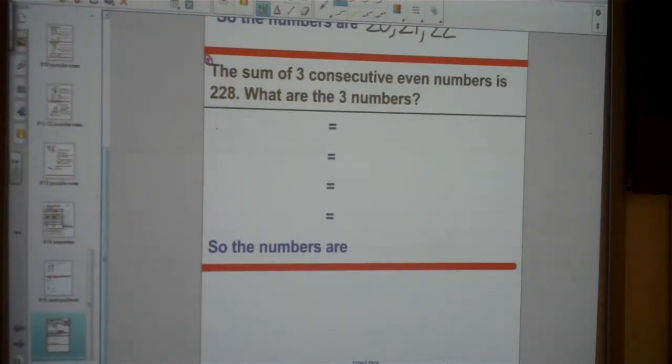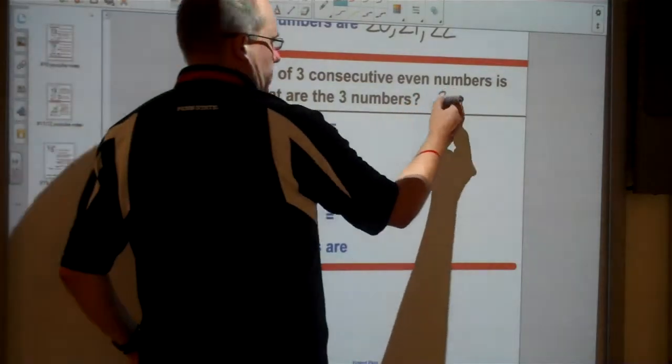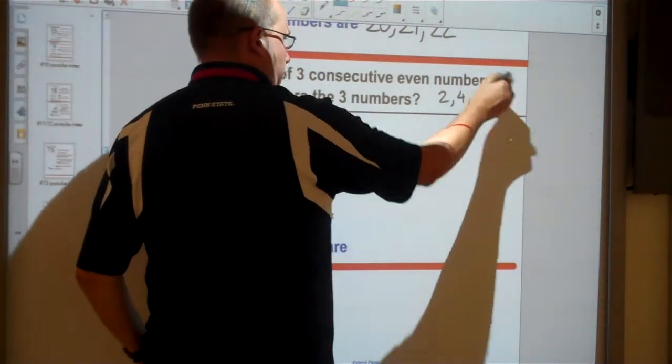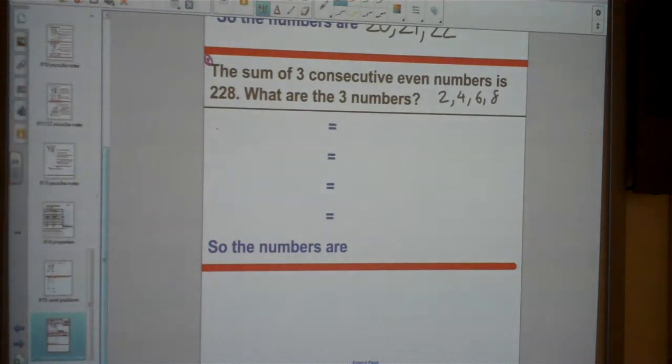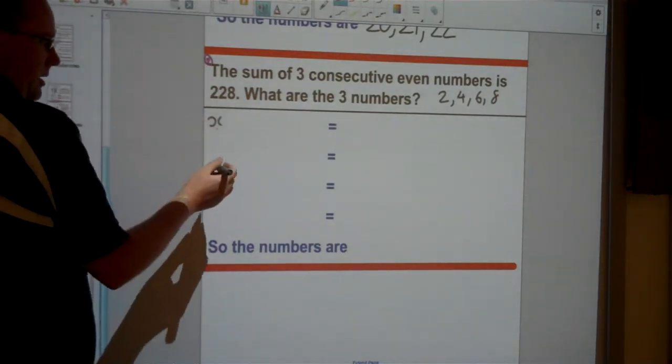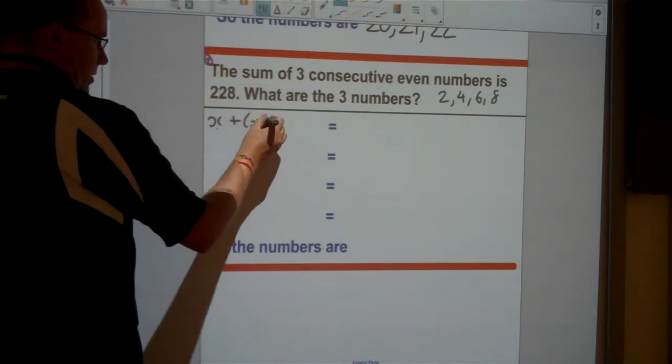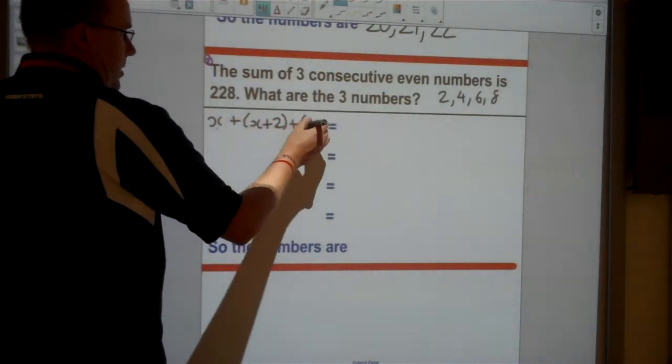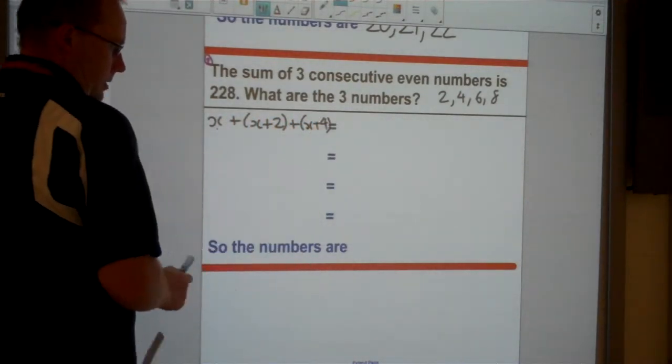Now the next one says even numbers. So even numbers are like 2, 4, 6, 8. Notice this time each number goes up by 2. So if I'm trying to find three consecutive even numbers, I'm going to start with x. But then I'm going to have x plus 2. Because two more. And then two more than that would be x plus 4.